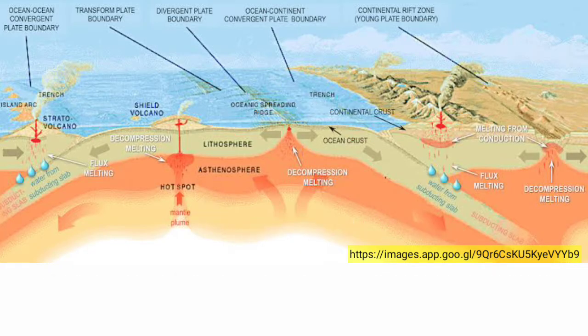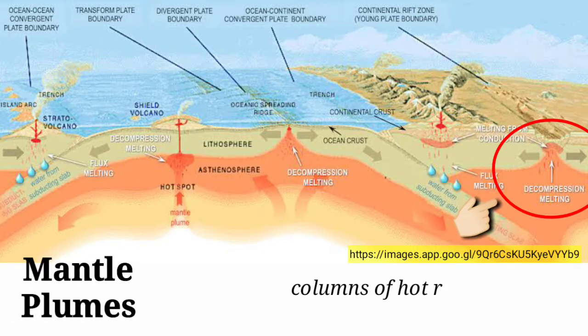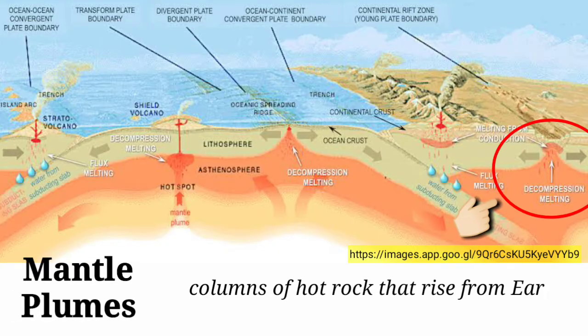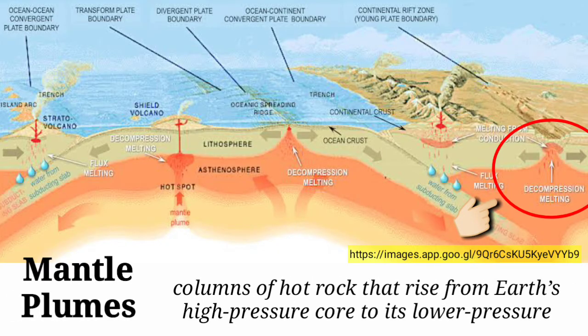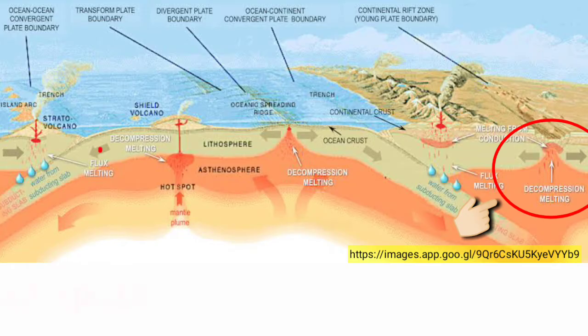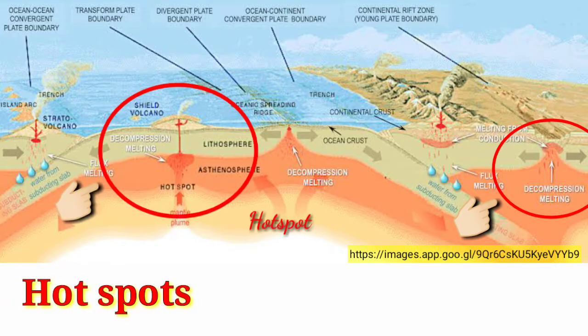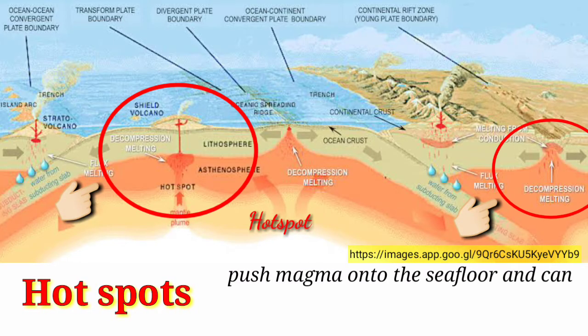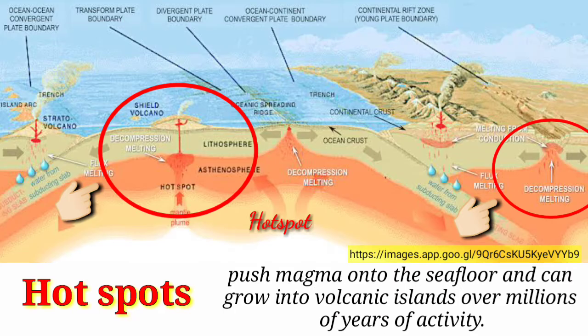Decompression melting also occurs at mantle plumes. These are columns of hot rock that rise from Earth's high-pressure core to its lower-pressure crust. When located beneath the ocean, these plumes are also known as hot spots. These push magma onto the seafloor and can grow into volcanic islands over millions of years of activity.